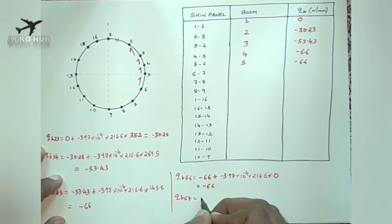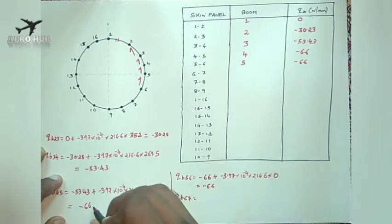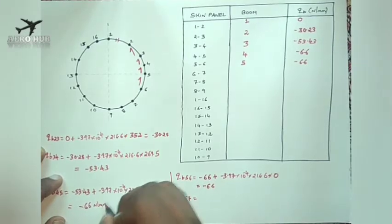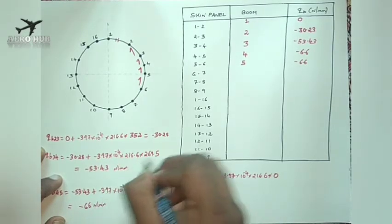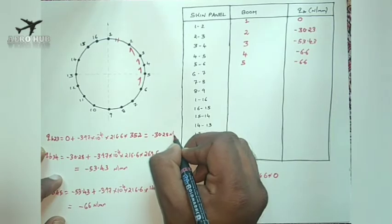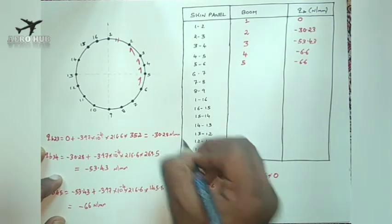We have Newton per millimeter units throughout. QB6,7 is equal to the previous skin panel shear flow, that is minus 66 N/mm.